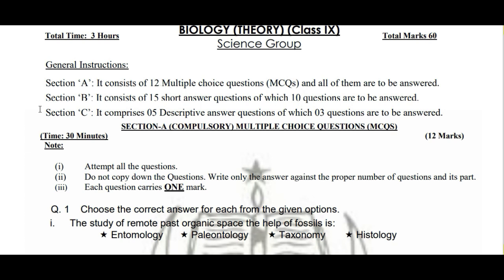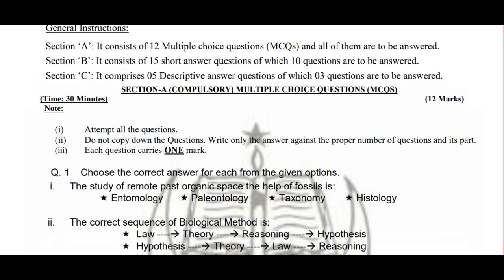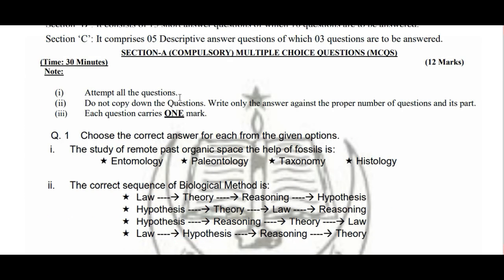Section B mein 15 short answer questions diye gaye hain jis mein se aapne 10 questions attempt karne hain. Section C bhi hai. Chalo MCQs ke saath start karte hain — aapko pehle 30 minutes diye jayenge MCQs attempt karne ke liye.